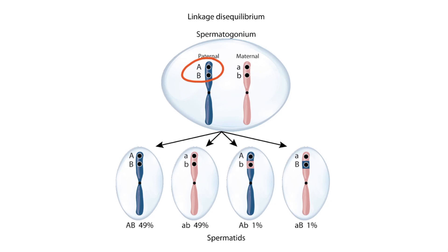There are fewer places where the chromosomes can break, so recombination only occurs a small percentage of the time. In this case, Big A Big B stay together 49% of the time, and little a little b stay together 49% of the time. Only 1% of the time does recombination occur, allowing for other variants such as Big A small b or small A Big B. In summary, linkage equilibrium usually occurs when two alleles are far apart on the same chromosome, and linkage disequilibrium usually occurs when two alleles are close together on the same chromosome.